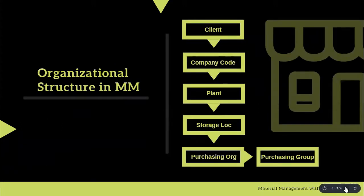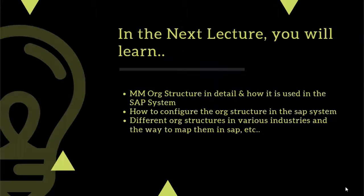The organizational structure in material management consists of client, company code, plant, storage locations, purchasing organization, and purchasing group. In the next lecture, you will learn everything discussed here in detail — material management's organizational structures and its components — and how they are used in the SAP system.